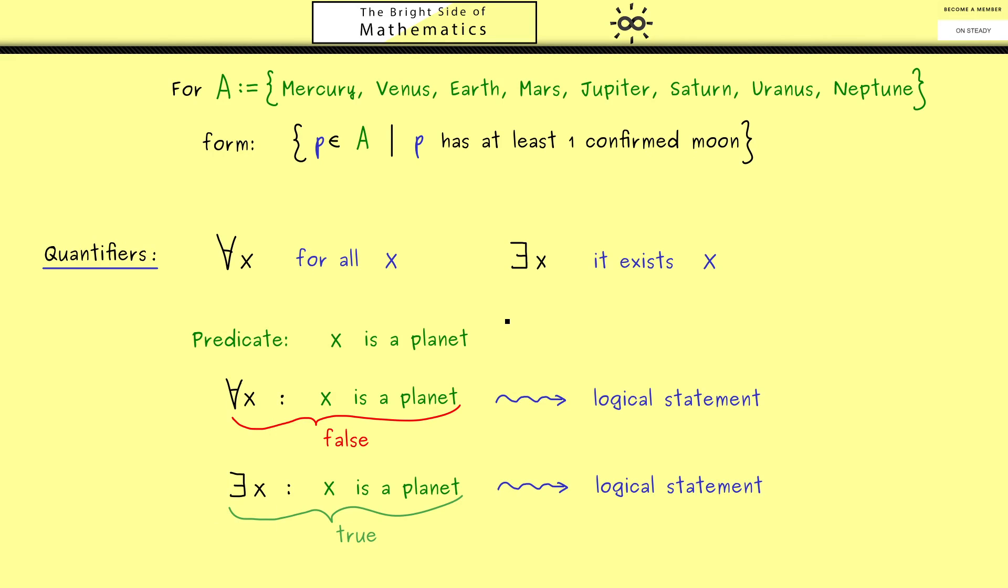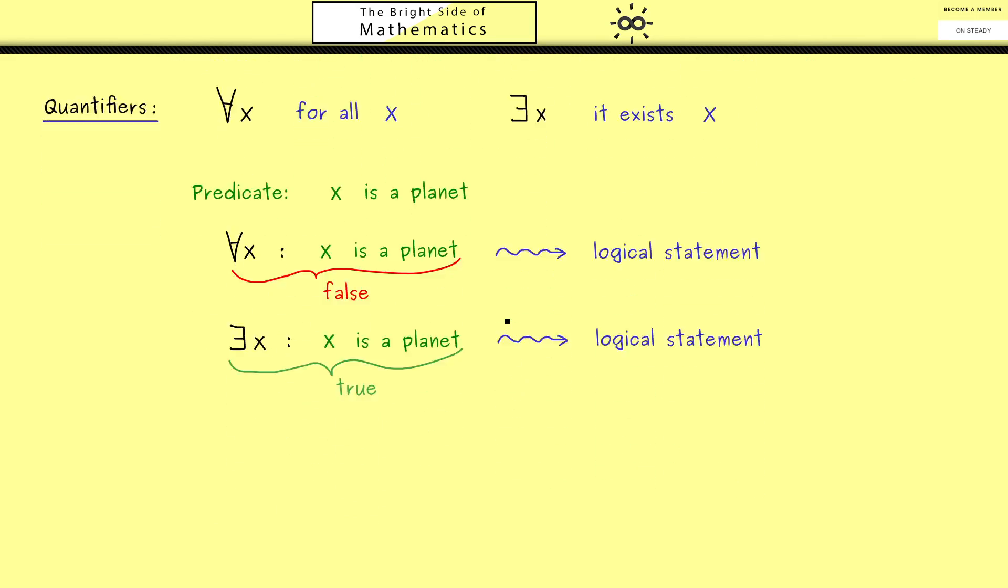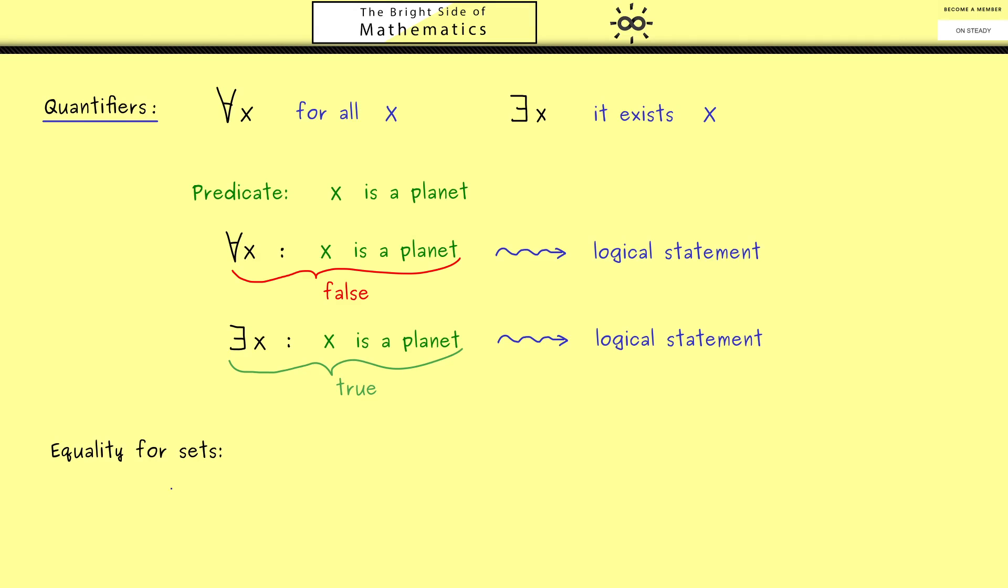Having these quantifiers, we can define a lot of things for our sets. The very first thing we should do is define the equality sign. We already know 2 sets should be the same when they contain the same elements, but now we can write down the correct meaning.